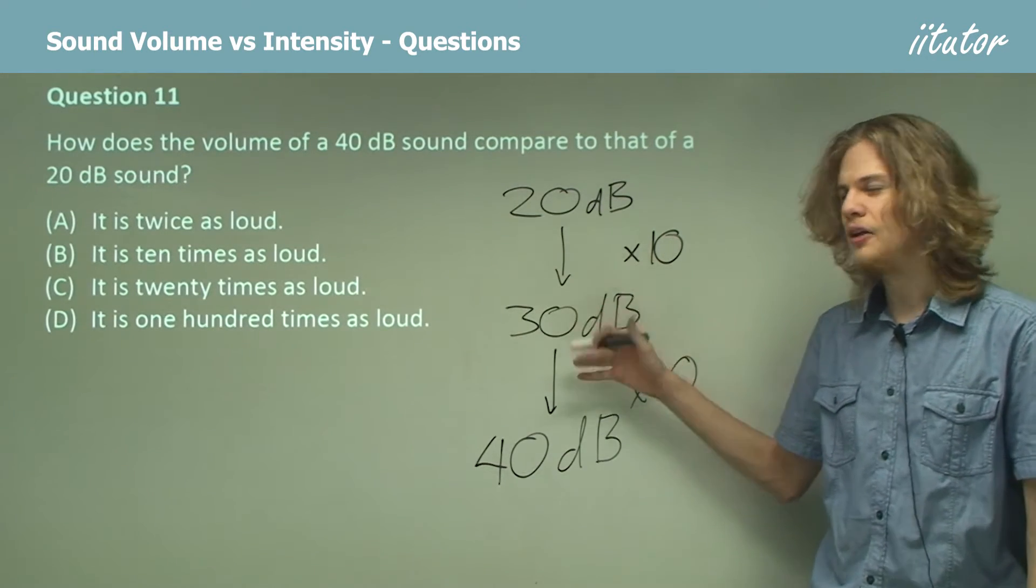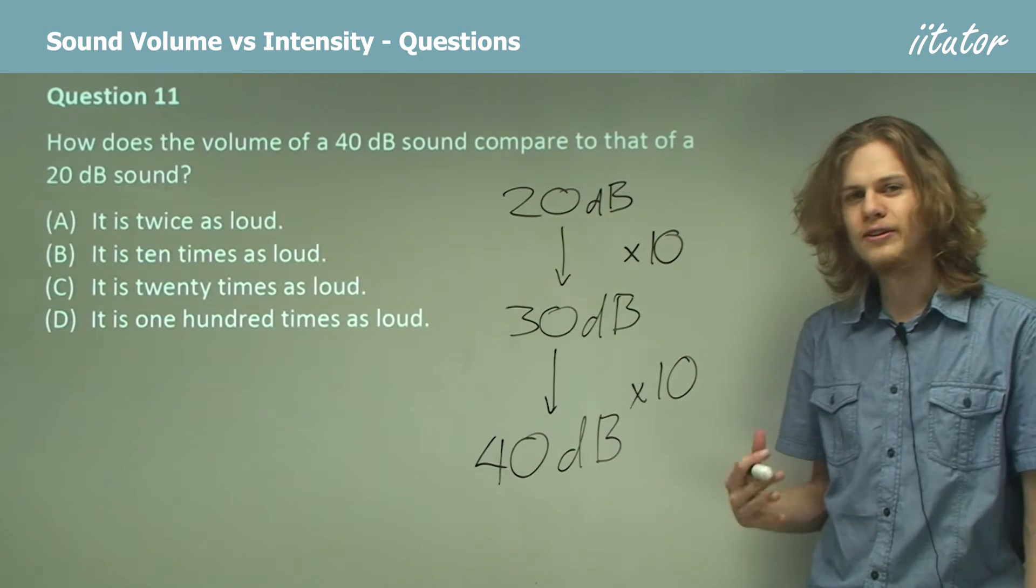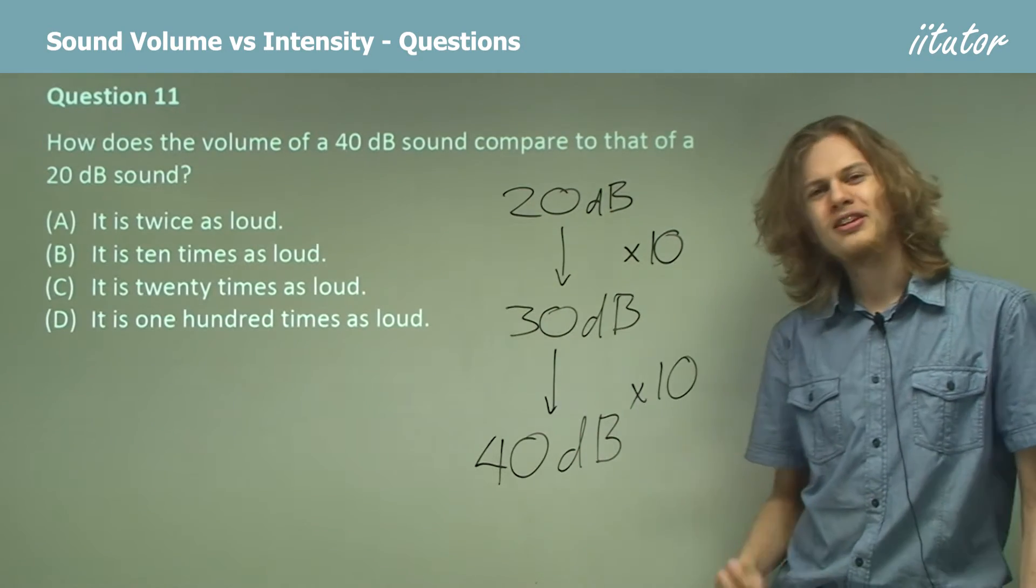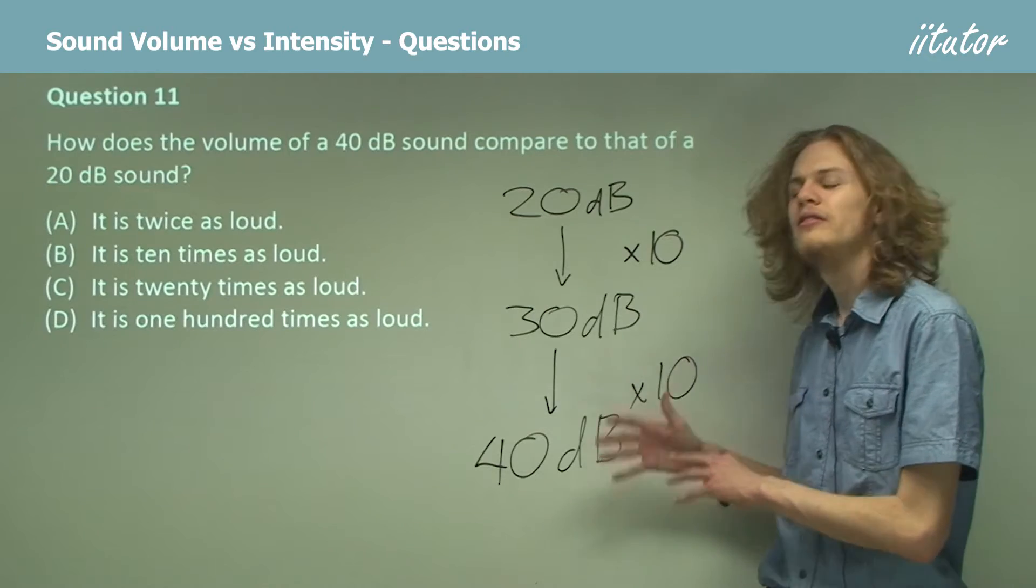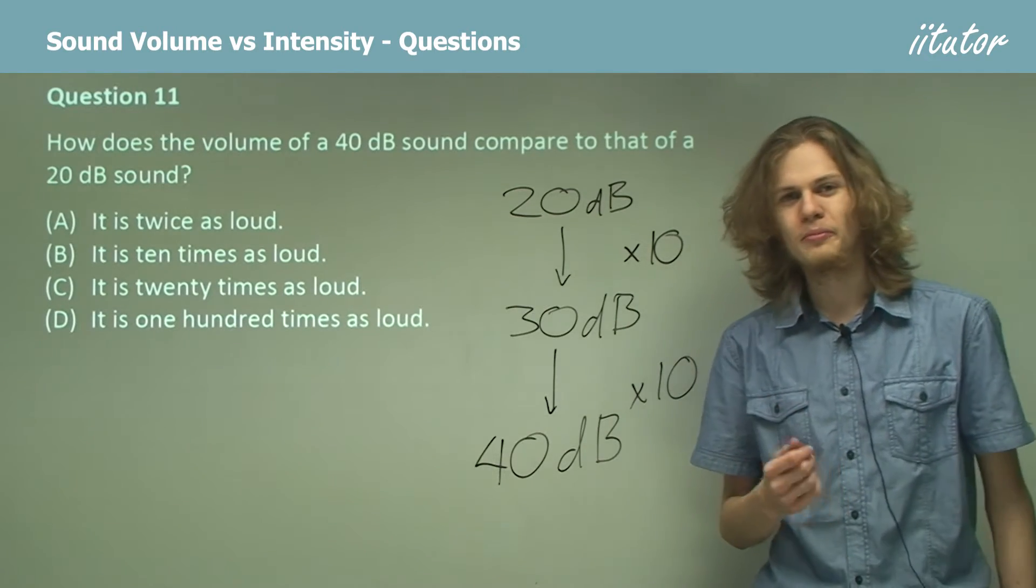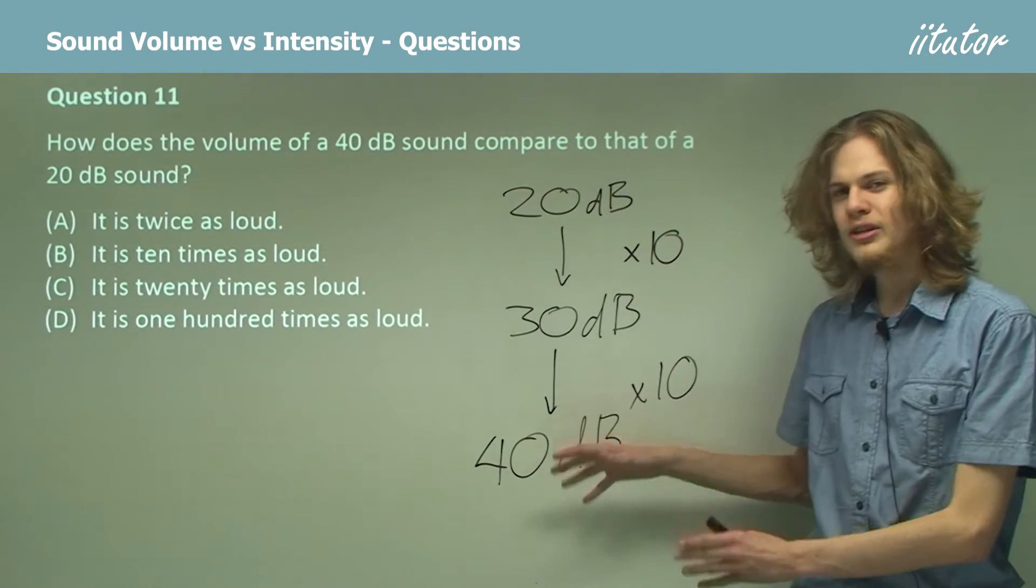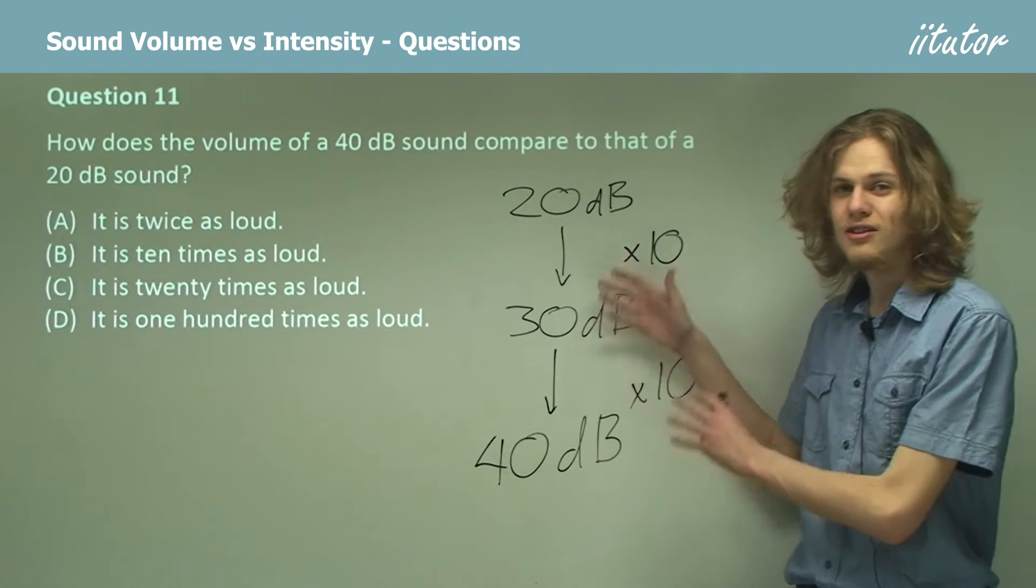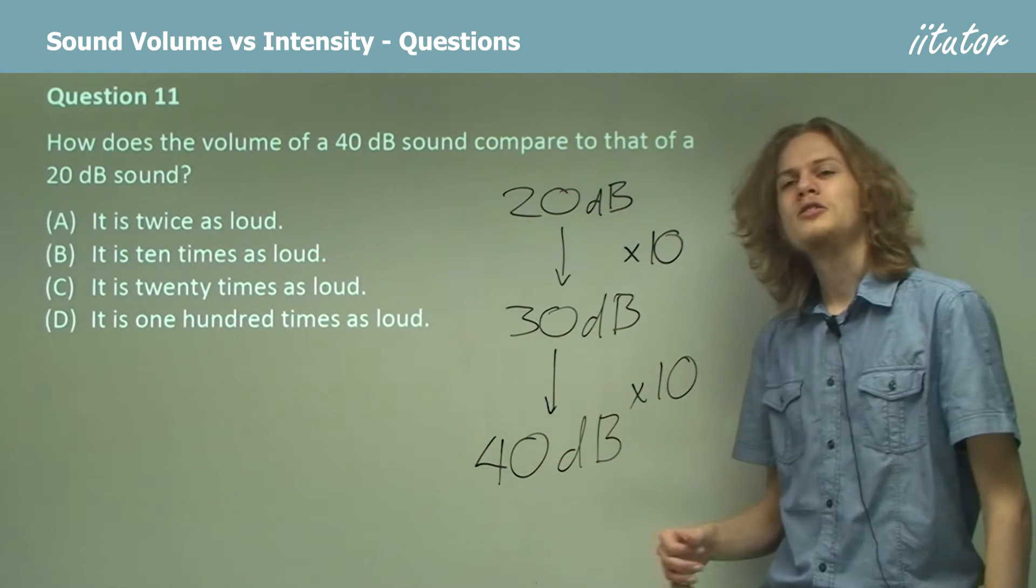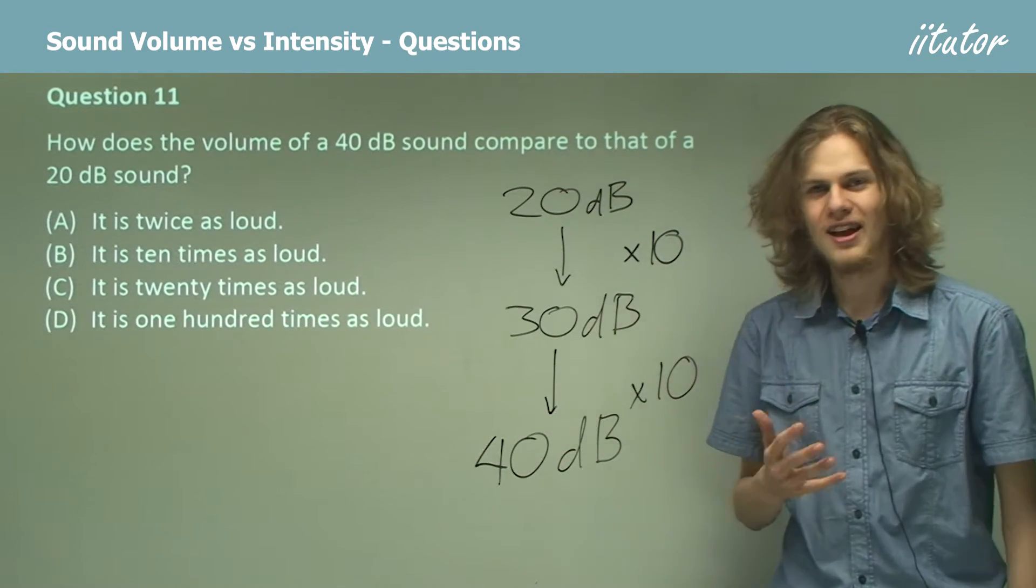So 30 is 10 times louder than 20 and 40 is 10 times louder than 30. So how many times louder is 40 than 30? Well the answer should be pretty obvious. If 40 is 10 times 30 and 30 is 10 times 20, then 40 must be 10 times 10 as loud as 20.